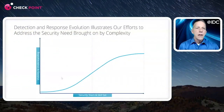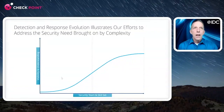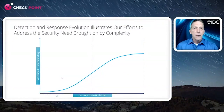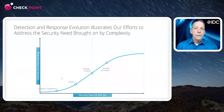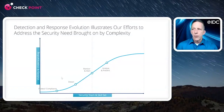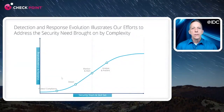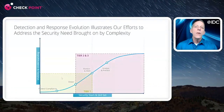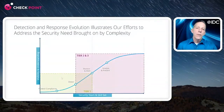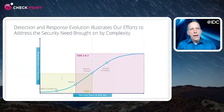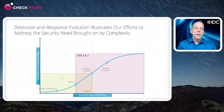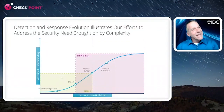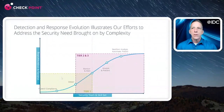That complexity is apparent when you look at the traditional detection and response evolution — what we call our Frankenstein slide. About eight years ago it was simple: protect, detect, alert. Then things got more complex, so we right-sized: we created tier one SOC analysts to triage and refine alerts, and tier two to solve them. That division of labor worked well for a while.